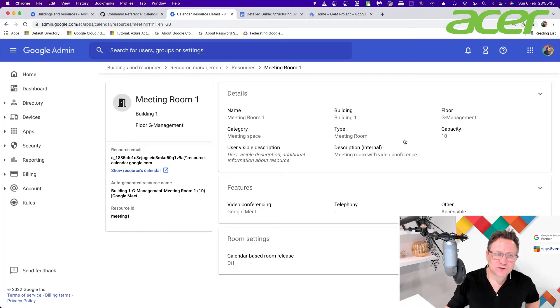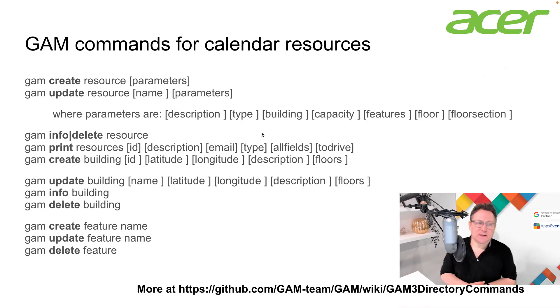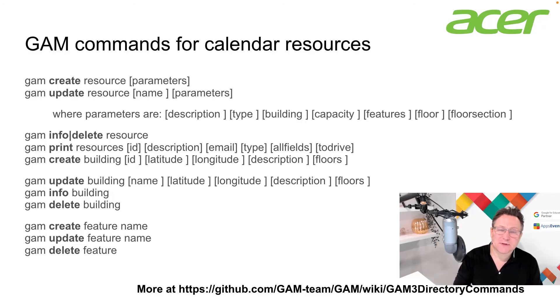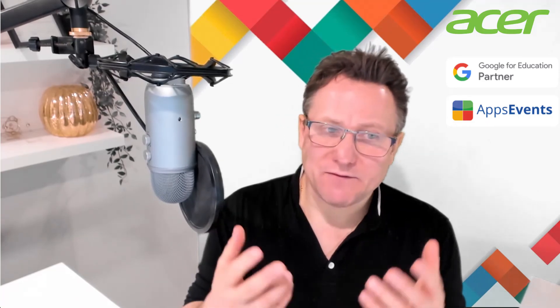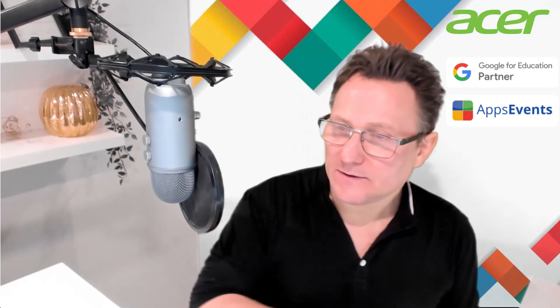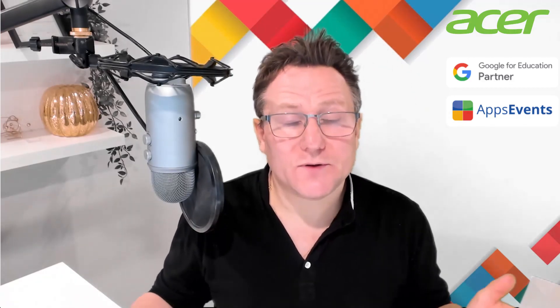That's how you create lots of calendar resources very quickly. There are many more GAM commands available — you can create, update, and print resources, add and update buildings, create new features, and so on. You can find out more at the GAM wiki. I'm Cherry Love and this has been a Google Admin tutorial from Apps Events and Acer — a really easy and quick way to create calendar resources in bulk using a spreadsheet CSV, Cloud Shell, and GAM.